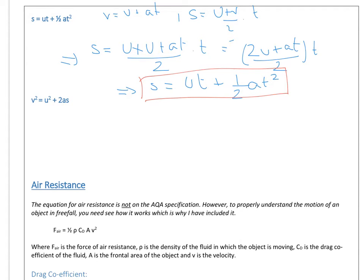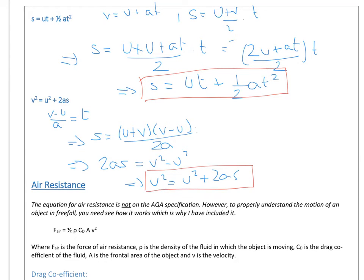And the other thing we can do is we can rearrange the first equation to make T the subject. So V minus U over A is equal to T. And we can substitute that in. So we get displacement is U plus V times V minus U all over 2A. So we've ended up with this expression. So we get 2AS is equal to V squared minus U squared. And then we get, when we rearrange that, V squared equals U squared plus 2AS. And there we have it.